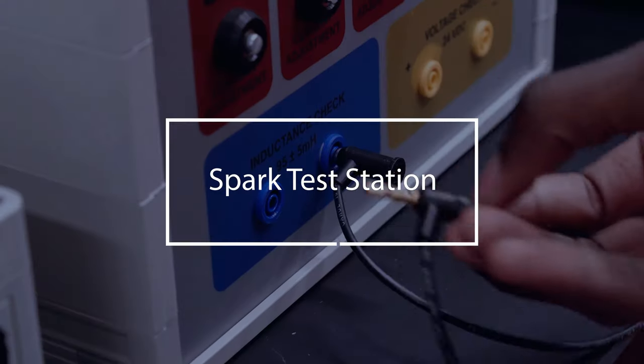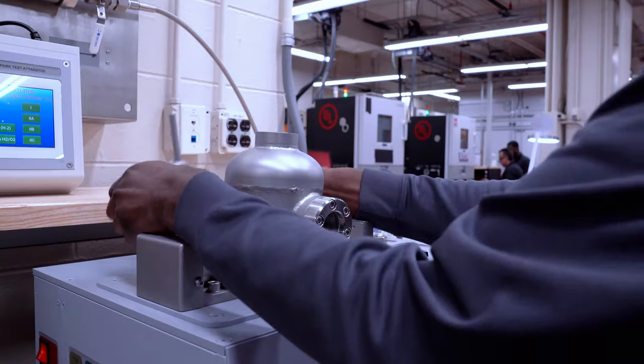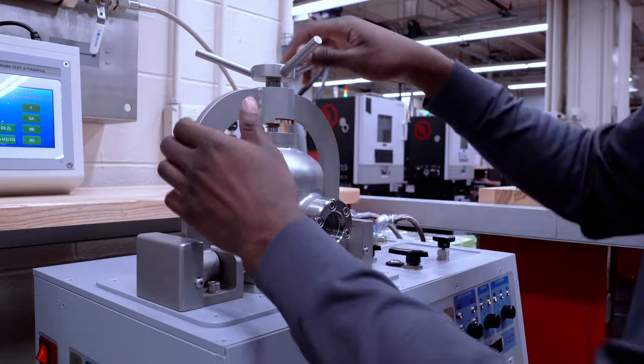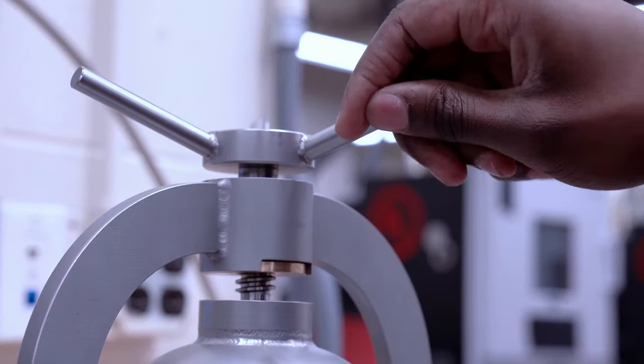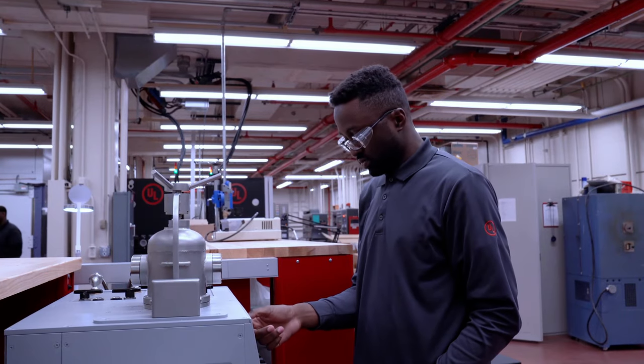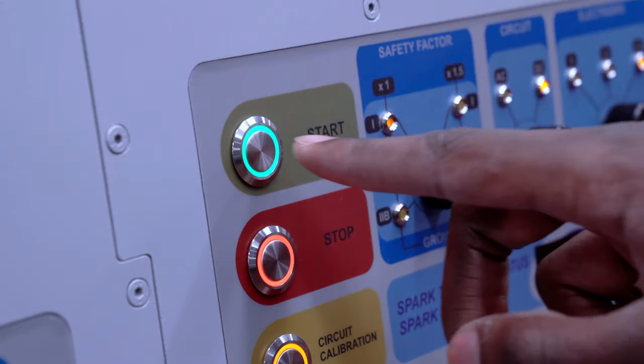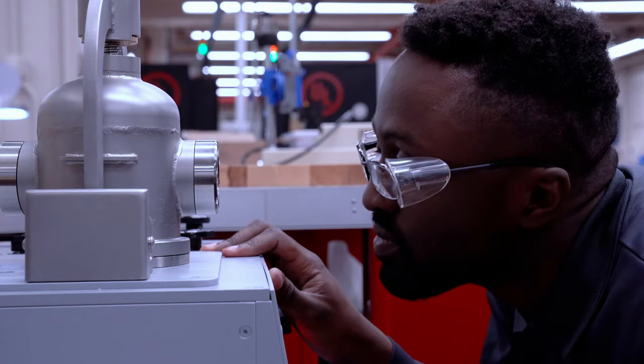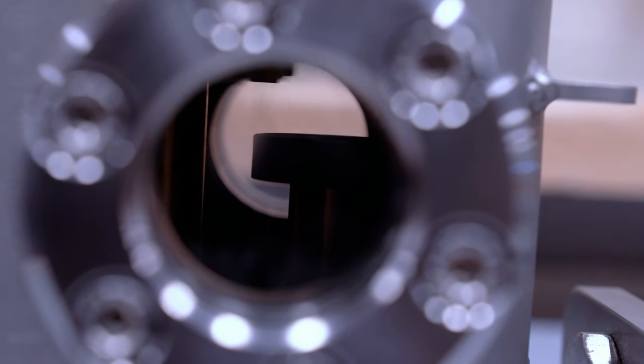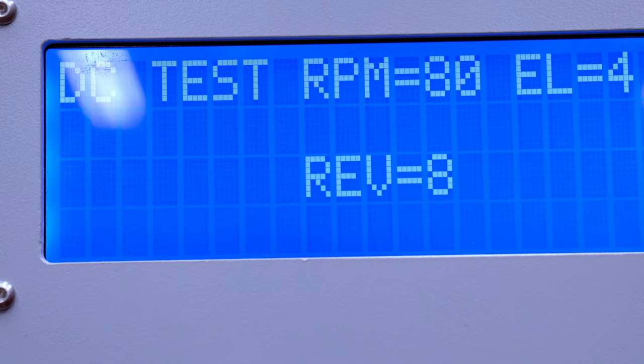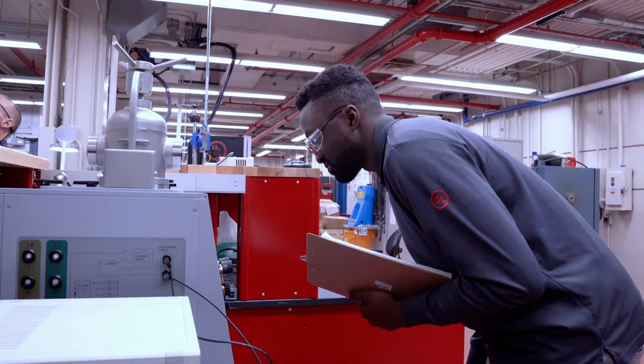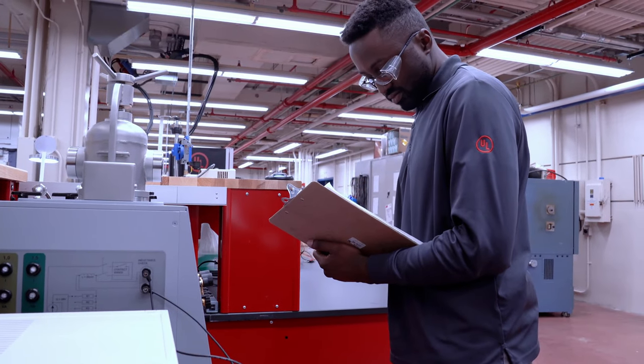The automated spark test station uses various types of gases and can handle oxygen-enriched testing. The overall ease of calibration of the station and automation of the process reduces downtime and results in quicker turnaround time. Additional features have been added to control spark time, rotational speed, and other parameters to help manufacturers design intrinsically safe circuits.